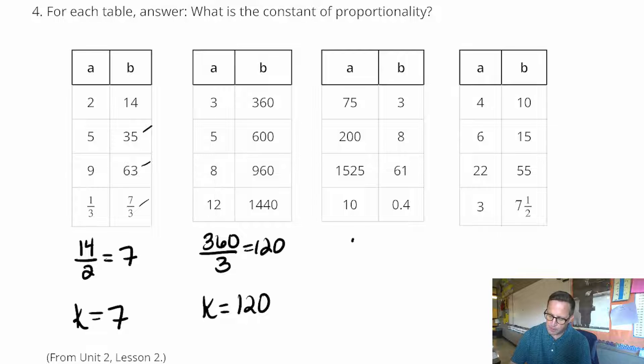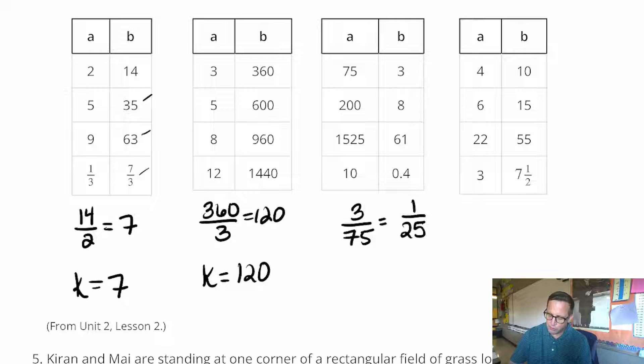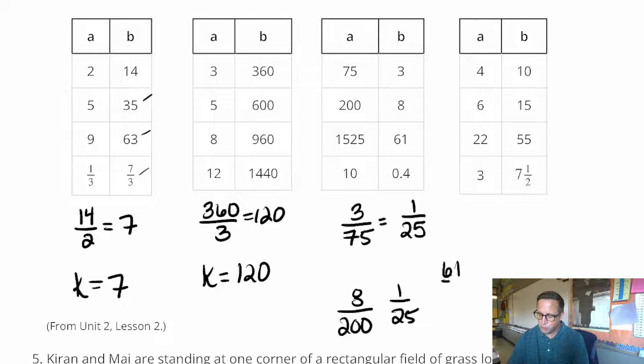And for the next one, I'm going to do 3 over 75. Now, 3 doesn't divide. I mean, it does. But I'm not going to change that to a decimal because decimals get really long and get a little bit cluttered with all the numbers that you have to put in there. But we can write that as 1 25th. And do the other numbers have that? 8 over 200, does that turn into 1 25th? You bet it does. Does 61 over 1525 turn into 1 25th? Yep. All those do. So that's our constant proportionality.